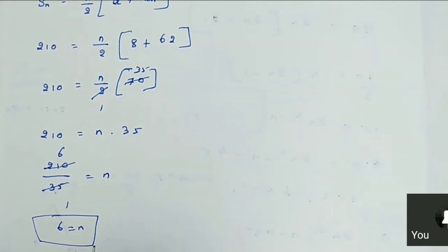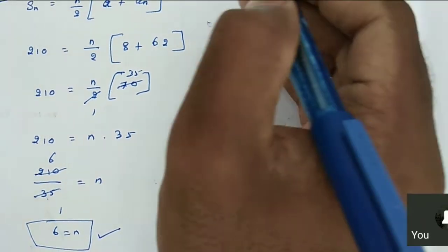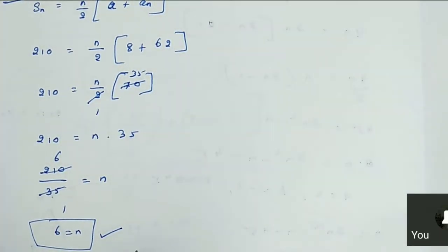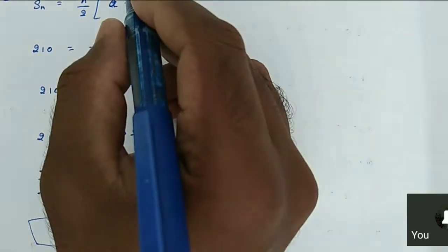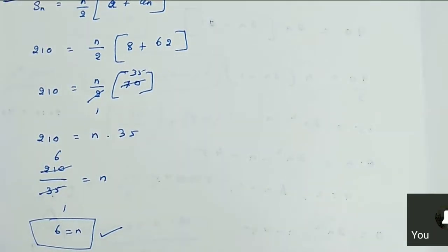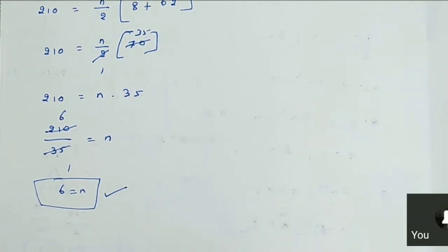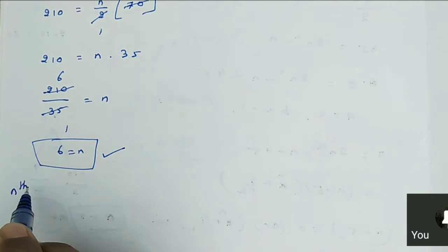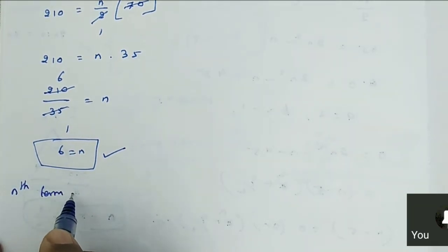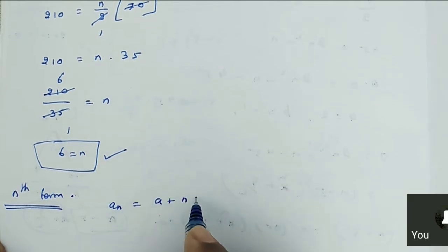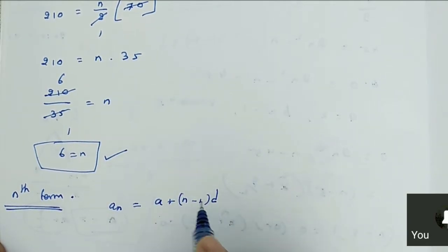We found the N value. Next, we have N value and A_N value and A value. So we can use the A_N algebra — A, A_N, and N we know. We need to find D. What formula are we supposed to use? Very good — the Nth term. So A_N is equal to A plus N minus 1 into D.